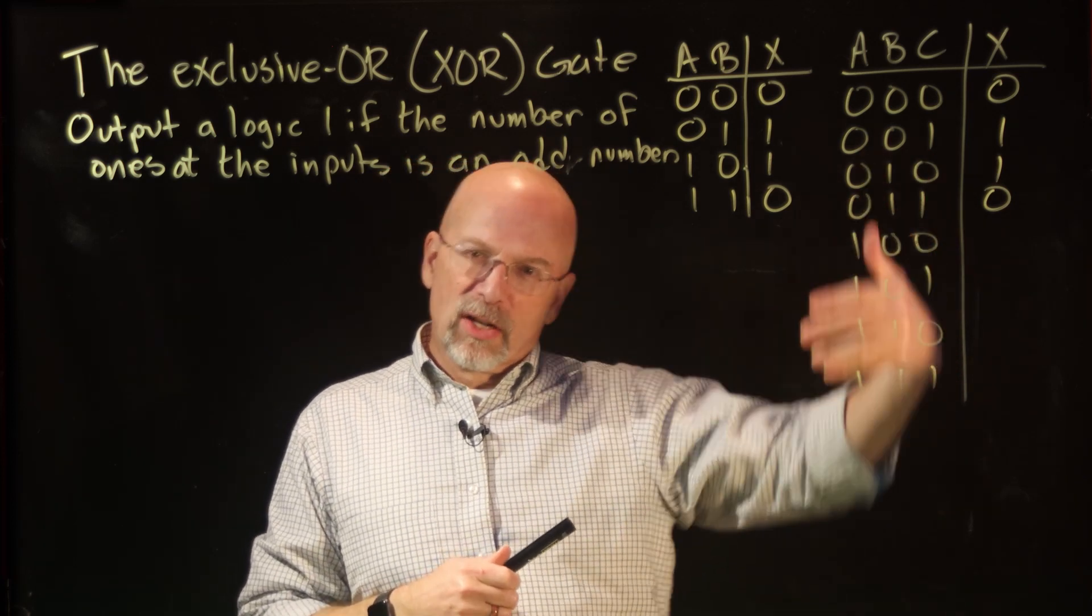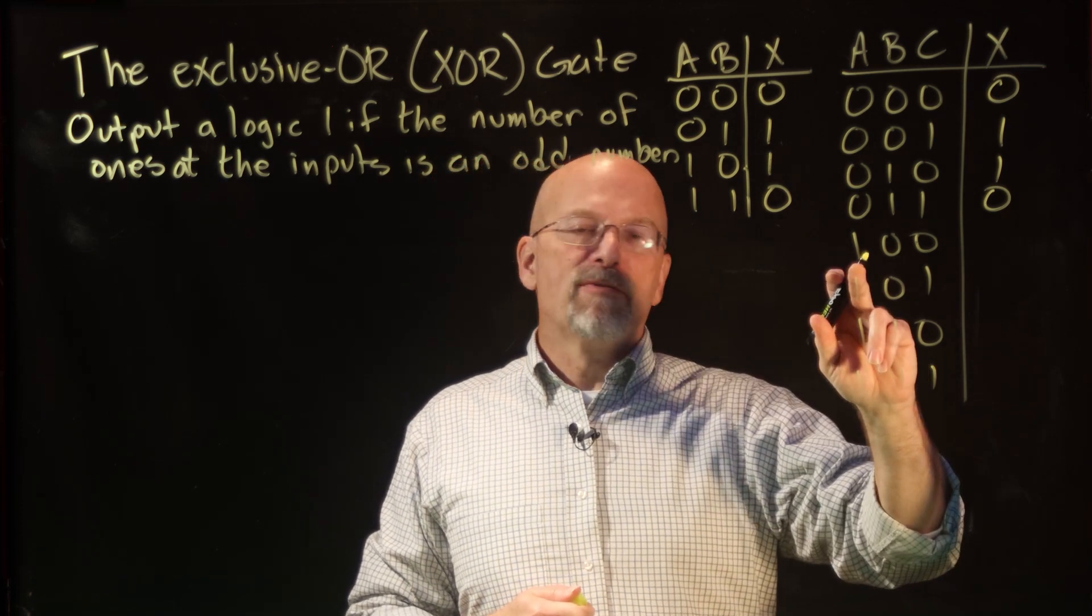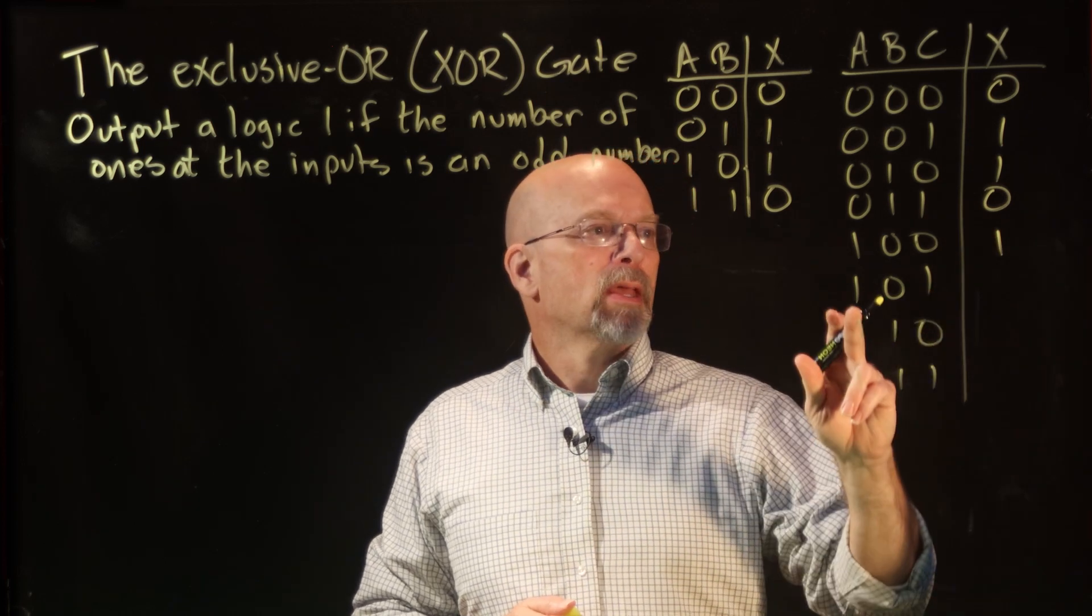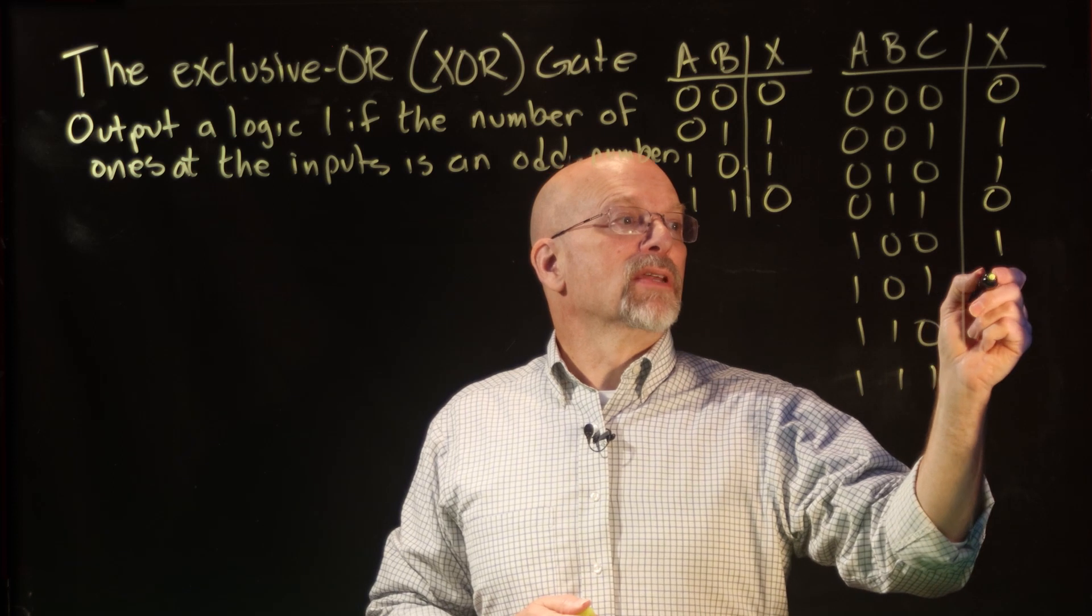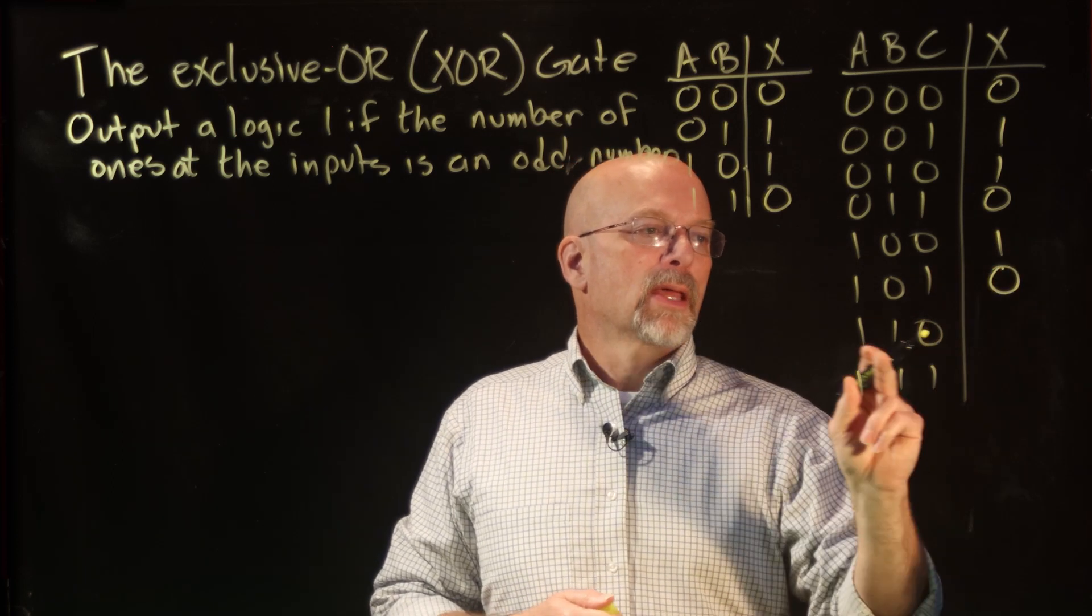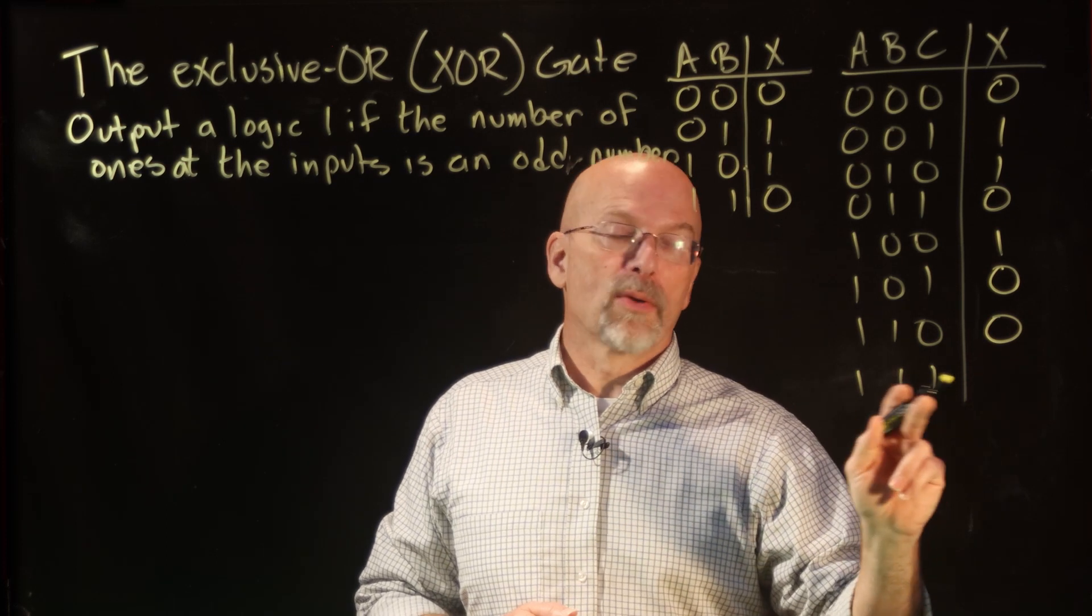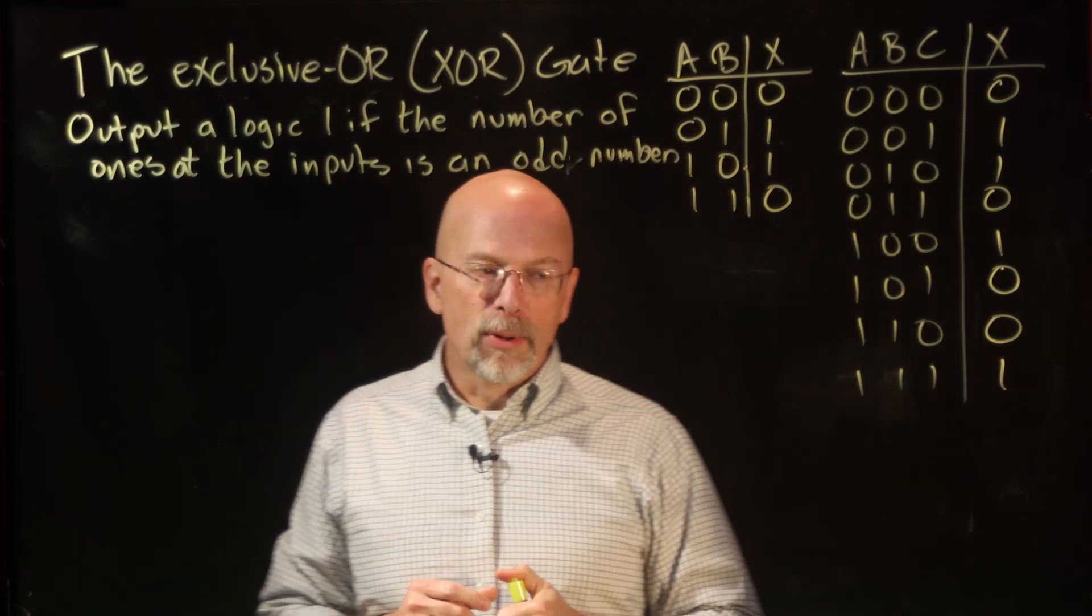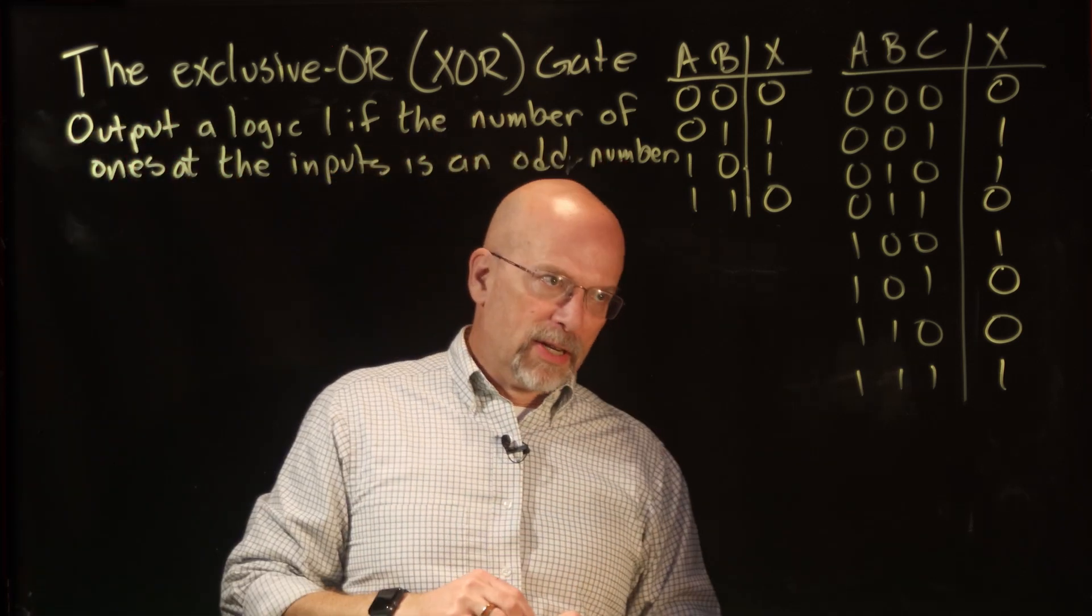But things change a little whenever you go into the bottom half. In the bottom half, the fifth row, 1,0,0, there's one 1, that's an odd number. Sixth row, 1,0,1, that is an even number, two 1s. Two 1s in the seventh row. And in the eighth row there are three 1s, that's an odd number. So we have our three-input exclusive-OR truth table here based on this new definition.